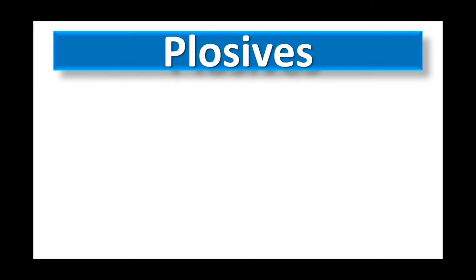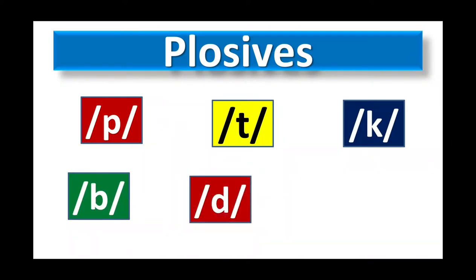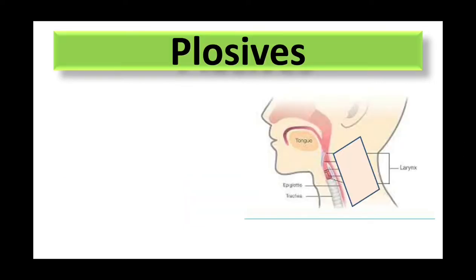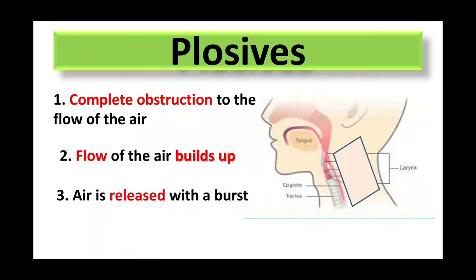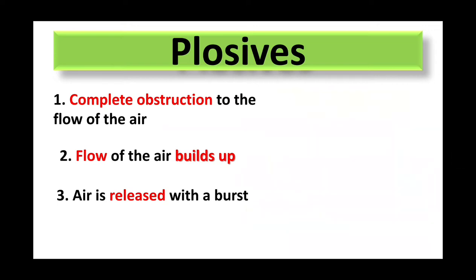To pronounce a plosive sound, you stop the air and then release it suddenly. The plosive consonants are: P, T, K, B, D, and G. These are plosives. There are basically three steps in which we produce plosives: number one — complete obstruction to the flow of air; number two — flow of air builds up; number three — air is released with a burst, with an explosion.